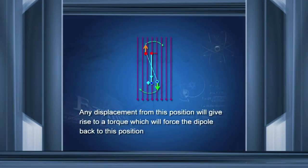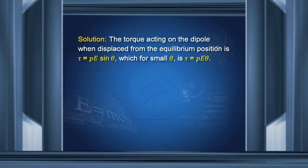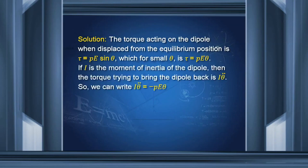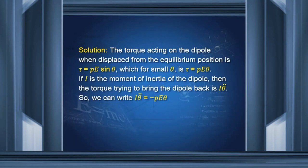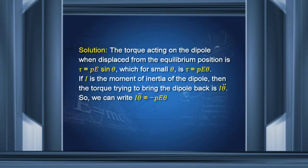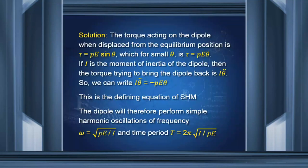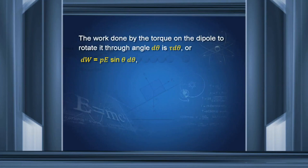When a dipole is parallel to the lines of force and displaced slightly, does it perform simple harmonic oscillations? The torque acting on it is pE sinθ, which for small θ is pE·θ. If I is the moment of inertia of the dipole, then the restoring torque gives I·(d²θ/dt²) = −pE·θ. The angular acceleration is proportional to the angular displacement, which is the signature of simple harmonic motion. The time period is T = 2π√(I/pE).